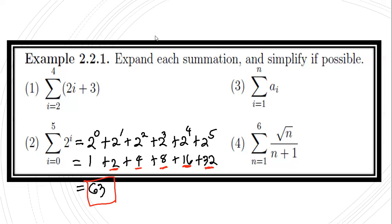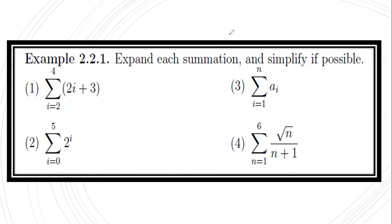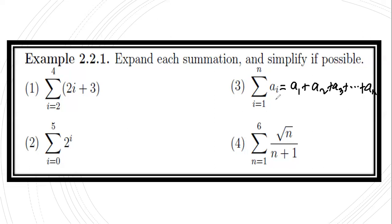The third example is the summation of a_i where i ranges from 1 to n. We replace i with 1 to get a_1, then a_2, then a_3, and so on until the last term a_n. Since we cannot combine any of these terms, the summation equals a_1 + a_2 + a_3 + ... + a_n.